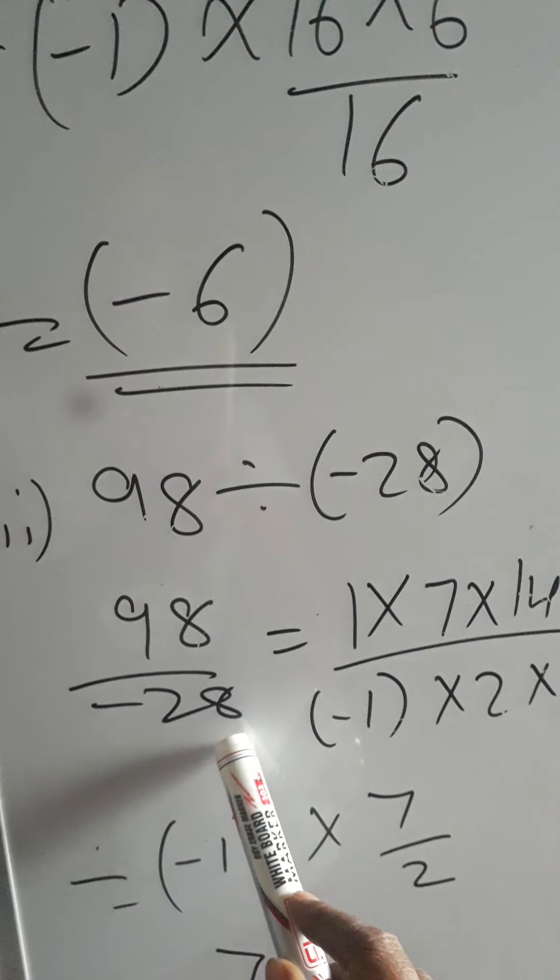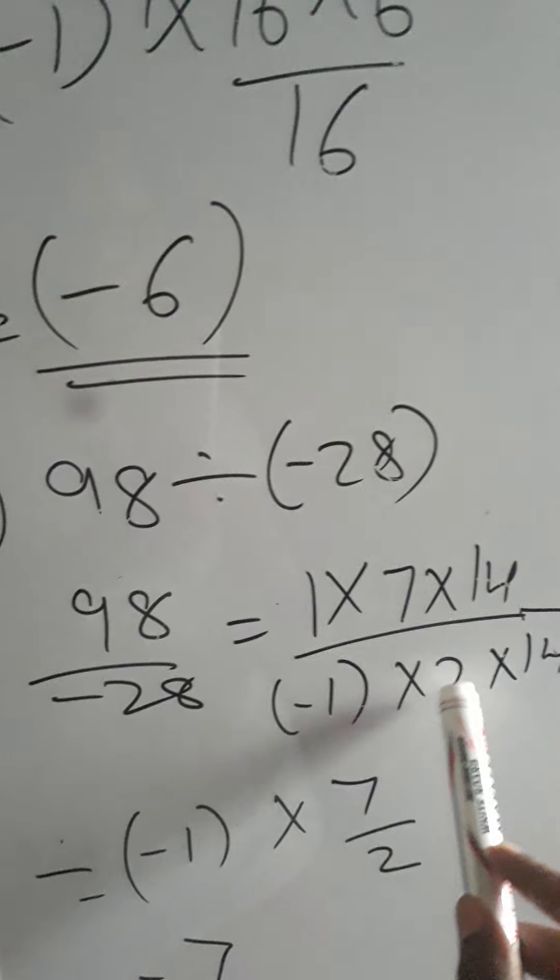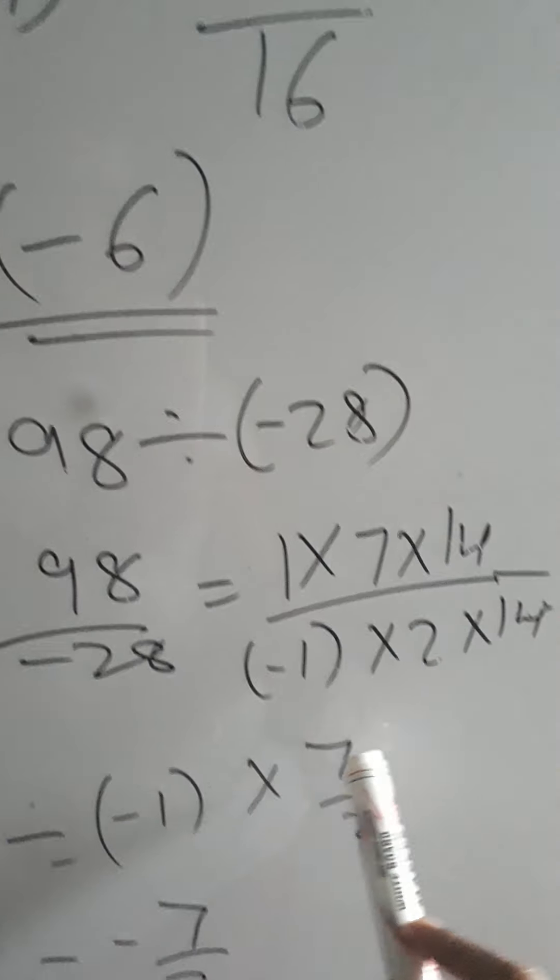So beforehand you could just inverse that. So minus 98 upon 28, and then 7 into 14 divided by 2 into 14 will give you the same answer, 7 upon 2.